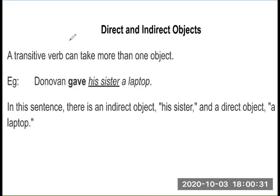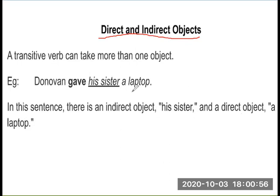Transitive verb is divided into direct object and indirect object. A transitive verb can take more than one object. For example: Dono gave his sister a laptop. In this sentence, his sister is the indirect object and a laptop is the direct object.